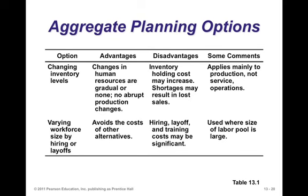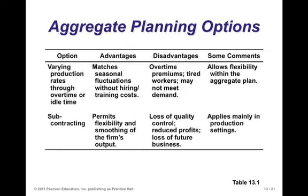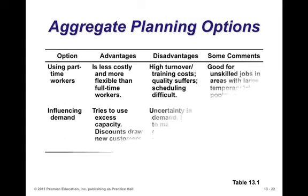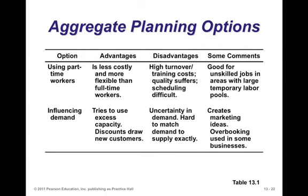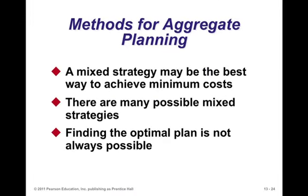Aggregate planning options include changing inventory levels, varying the workforce size, varying production rates, subcontracting, using part-time workers, and influencing demand — each with advantages and disadvantages. When it comes to strategies, we have pure strategies and mixed strategies. A pure strategy might simply keep a fixed production rate, a fixed number of workers, or chase the demand. A mixed strategy is a combination of all of those, and in many cases the mixed strategy might achieve minimum costs. Finding the optimal plan is not always easy and may not exist depending on the conditions placed on the planning process.